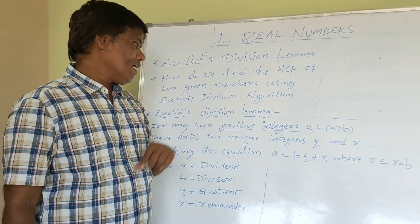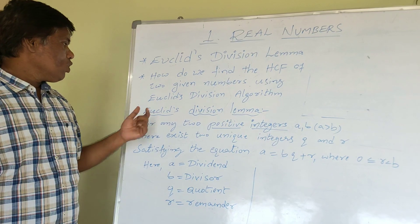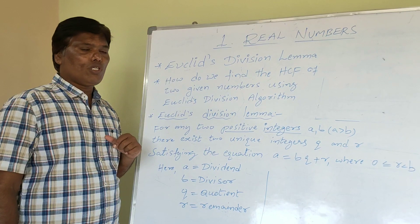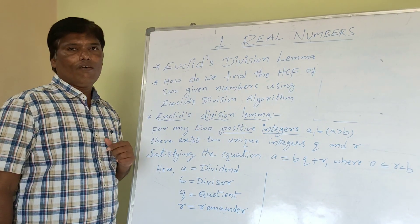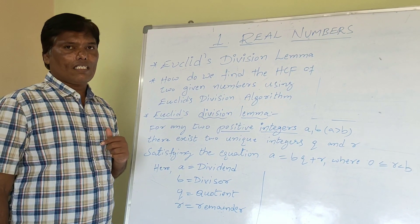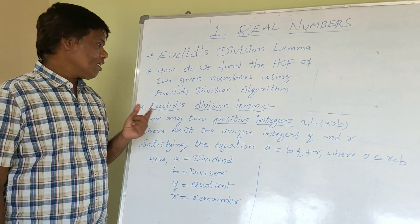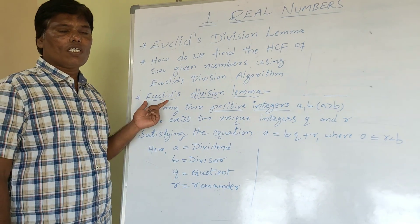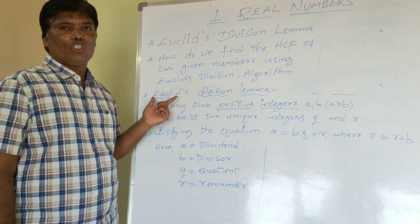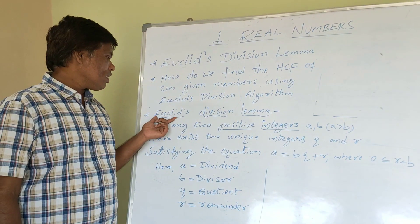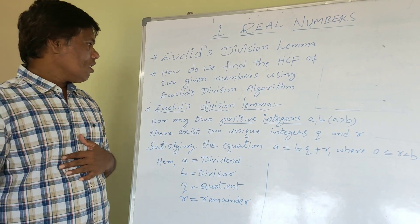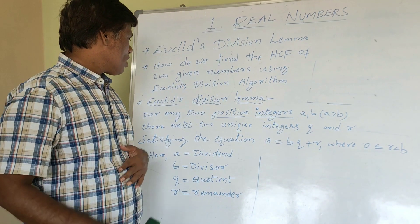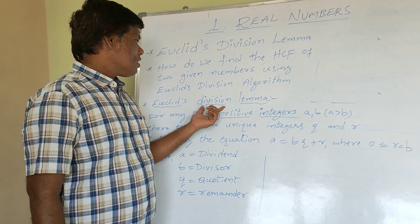I hope you understood what a lemma is. And what is Euclid? It is the name of a famous mathematician. Already in 9th class, we learnt about him in the chapter Elements of Geometry. The book Elements is written by Euclid. He is also considered the father of Geometry. He was a famous mathematician.